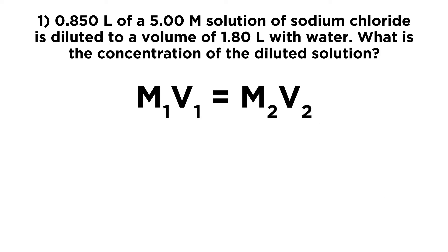So let's take a look at this first question. Now for all of these questions, anytime we're doing dilution, we're always going to use this equation: M1V1 equals M2V2. That means the concentration or molarity of the initial solution times the volume of the initial solution will be equal to the concentration or molarity of the final solution times the volume of the final solution. We're just going to plug in what we know and solve for what we don't.